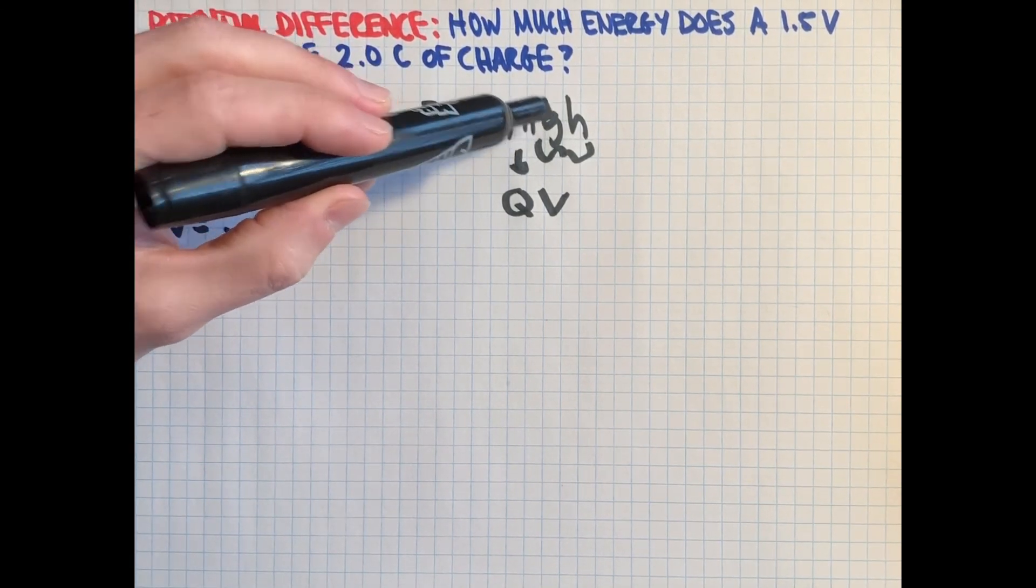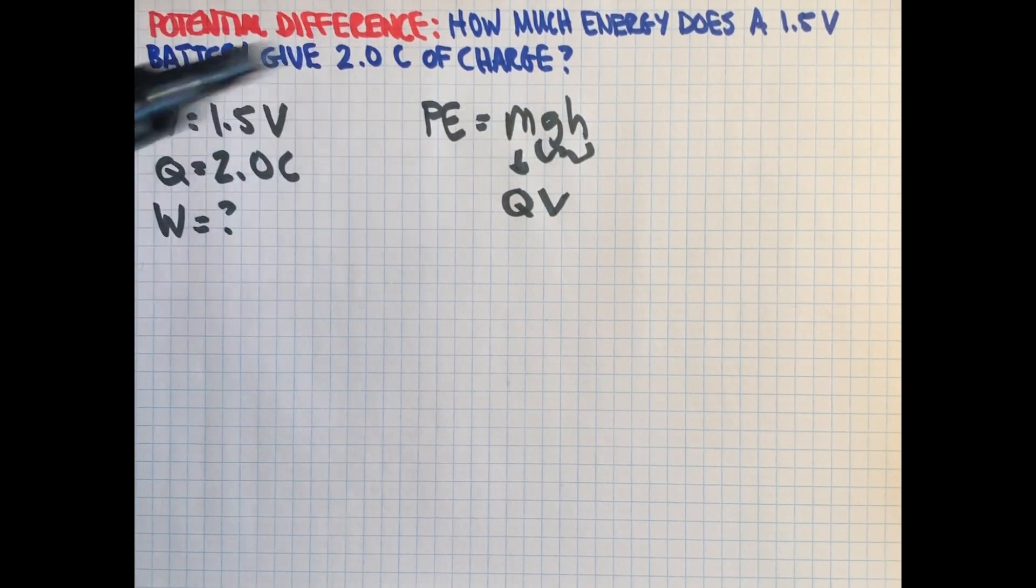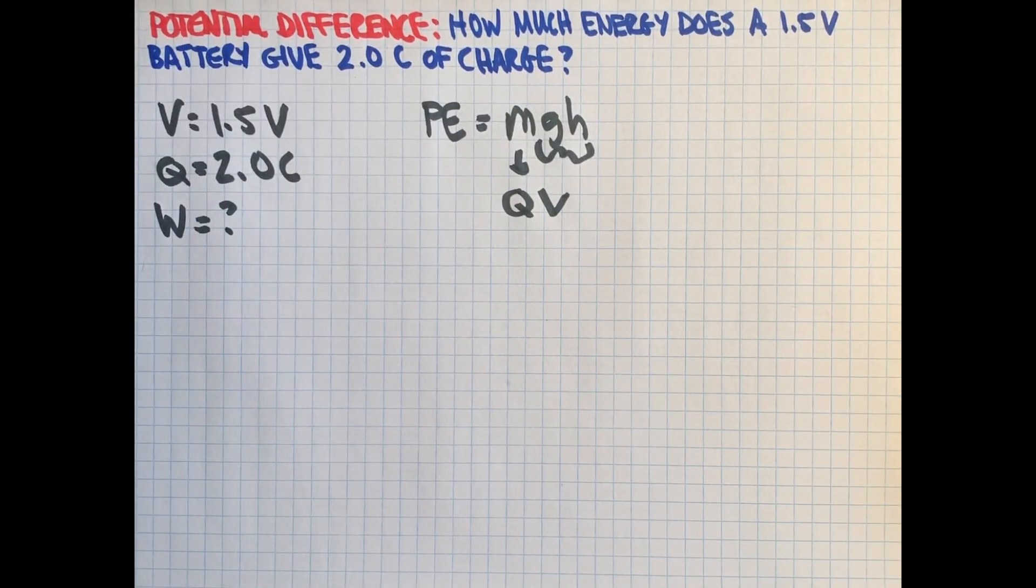If on a planet gravity is very weak, you'd have to raise it a lot higher to get that same kind of potential energy.